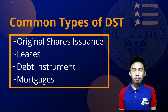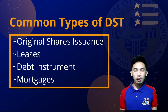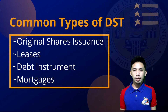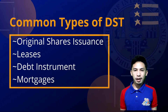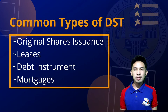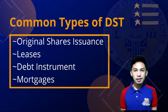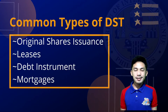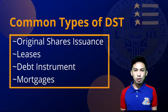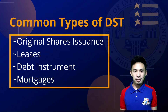Out of the 25 major DST categories, I will be elaborating on the four most common types of DST transactions. These are: original shares issuance, leases, debt instruments, and mortgages.